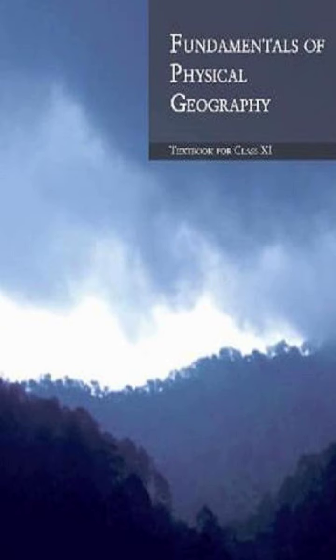Endogenic processes: the energy emanating from within the earth is the main force behind endogenic processes. This energy is mostly generated by radioactivity, rotational and tidal friction, and primordial heat from the origin of the earth. This energy, due to geothermal gradients and heat flow from within, induces diastrophism and volcanism in the lithosphere. Due to variations in geothermal gradients and heat flows, crustal thickness, and strength, the actions of endogenic forces are not uniform, and hence the tectonically controlled original crustal surface is uneven.